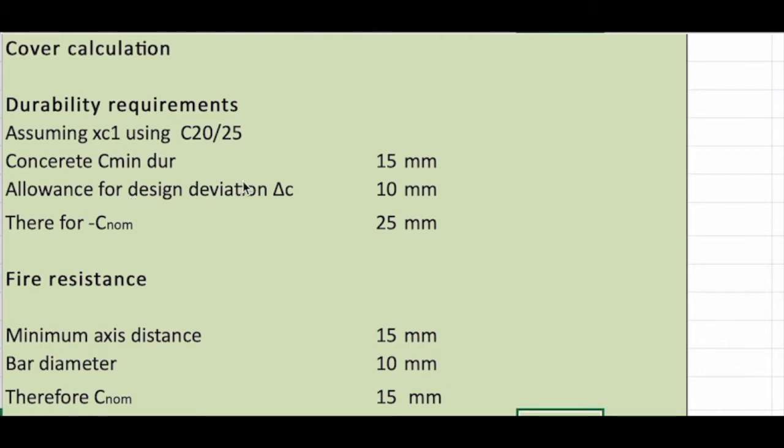The C minimum for durability will be 15 mm and allowance for the design deviation delta C will be 10 mm. Therefore, C nominal will be 25 mm.